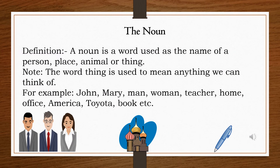The noun. First let's look at the definition of noun. A noun is a word used as the name of a person, place, animal or thing. With this definition we clearly come to know that any person, any place, any animal or any object or thing is a noun.